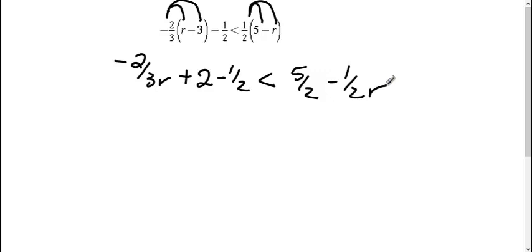Then I need to combine my like terms, so I'm going to combine these here, so I still have negative two-thirds r, a positive two minus a one-half gives me a positive three-halves, which is one and a half, is less than five-halves minus one-half r.